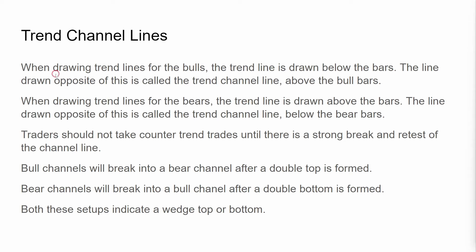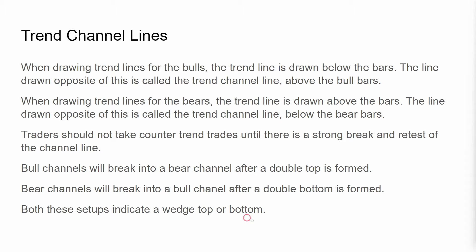Trend channel lines. When drawing trend lines for the bulls, the trend line is drawn below the bars. The line drawn opposite is called the trend channel line and it goes above the bars. For bears, the trend line is drawn above the bars and the trend channel line goes below the bear bars. Traders should not take counter-trend trades until there is a strong break and retest of the channel line. Bull channels will break into a bear channel after a double top is formed. Bear channels will break into a bull channel after a double bottom is formed. Both setups indicate a wedge top or bottom.